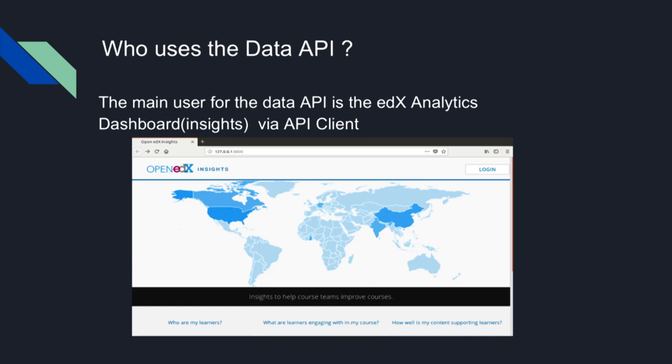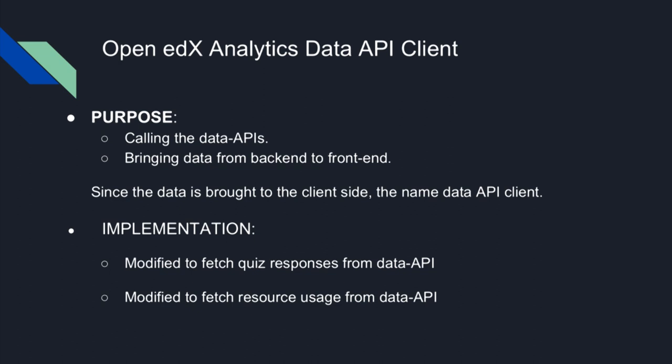Once the data API is set up, all the data must be transferred to the dashboard to display as graphs and charts for instructor insights. The edX analytics dashboard does not directly extract information from the data API — it uses the data API client as an interface between the data API and the dashboard. The data API client transfers data from backend to frontend, supports calling of APIs, and brings data from the Open edX data warehouse to the dashboard. It was modified for fetching quiz responses and resource usage from the data API.